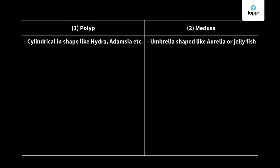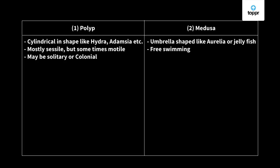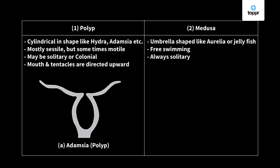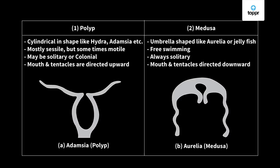Polyps are mostly sessile, though some are motile, whereas medusa are usually free-swimming. Polyps may be solitary or colonial, but medusa are always solitary. The mouth and tentacles of polyp are directed upward, whereas in medusa the mouth and tentacles are directed downwards. Polyp is the asexual form whereas medusa is the sexual form.